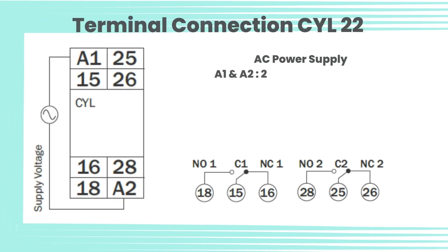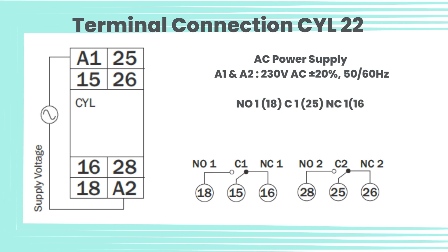Terminal connection for CYL-22 — AC power supply: A1 and A2, 230 volt AC plus or minus 20 percent, 50/60 hertz. NO1: 18. C1: 25. NC1: 16. NO2: 28. C2: 25. NC2: 26.